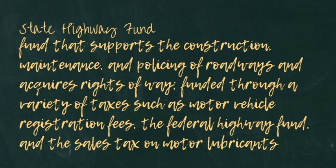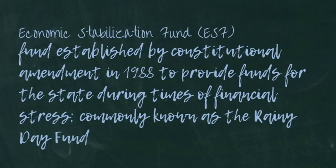The ASF also provides funds for the Instructional Materials Fund, which funds state purchases of instructional materials. The State Highway Fund supports the construction, maintenance, and policing of roadways, funded through motor vehicle registration fees, the federal highway fund, and the sales tax on motor lubricants. The Economic Stabilization Fund — commonly known as the Rainy Day Fund — was established by a constitutional amendment in 1988. If collections from oil and gas taxes in any year exceed the 1987 amount, 75 percent of the excess is transferred to the fund. ESF monies can be appropriated with a three-fifths vote of members of both houses, or two-thirds of members present for extraordinary purposes.